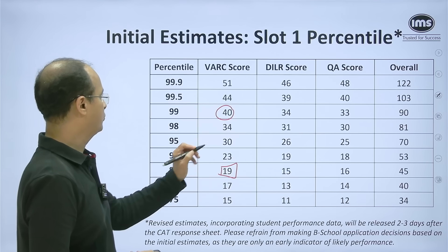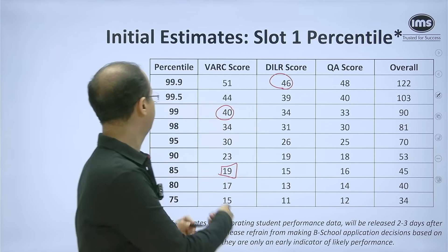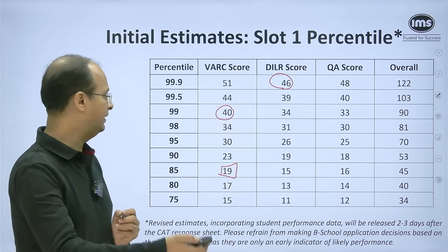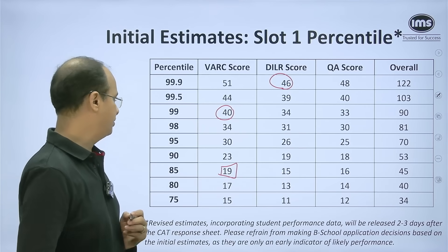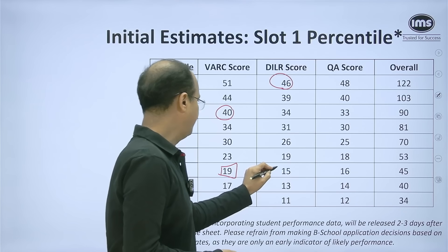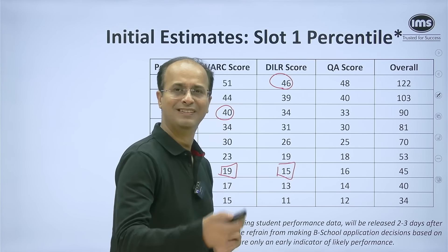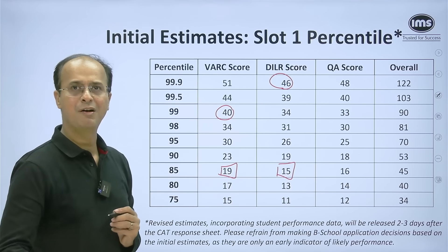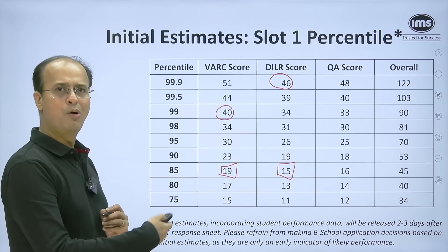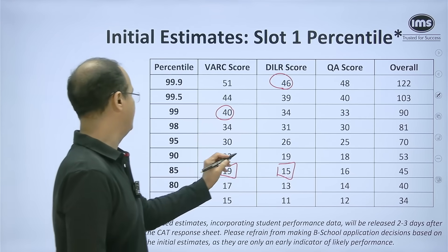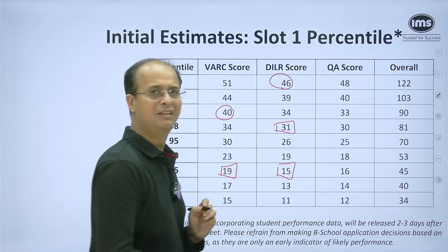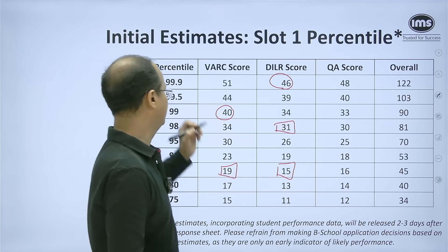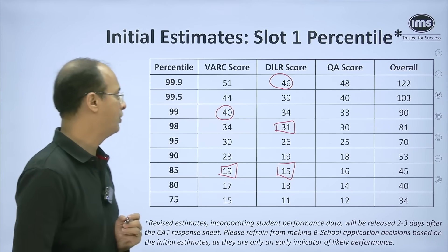In DILR, a score of 46 will fetch you a 99.9 percentile. This is actually 5 to 7 marks lower than slot 1 of last year. A score of 15, which is 5 net answers correct, would clear the cutoff at the 85th percentile mark. Doing about 2 sets well will help you reach the 97–98 percentile mark, and if you do 3 odd sets well, you will cross the 99th percentile mark according to us.